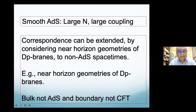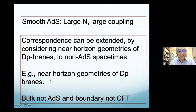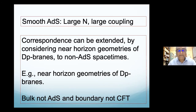The correspondence can be extended beyond AdS/CFT to geometries which are not anti-de-Sitter space by considering near-horizon geometries of Dp-branes, where p can be zero, one, two, three, etc. For three-branes you get anti-de-Sitter space, as many of you know. In other cases we also believe there is a similar correspondence where you retain the near-horizon geometry of these Dp-branes and keep the corresponding field theory from the Dp-branes by going to low energies. This field theory is no longer a conformal field theory, the bulk is not anti-de-Sitter space, but there is such a correspondence.